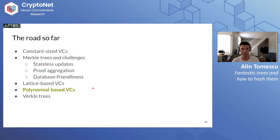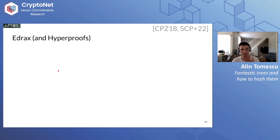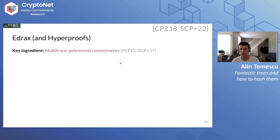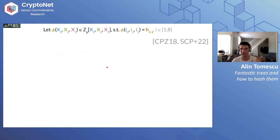Now I want to talk about polynomial-based VCs. Lattice-based VCs kind of address stateless updates. With polynomial-based VCs, we're hoping to address proof aggregation and stateless updates. I'll discuss two lines of work: the EDRAX line of work (CPZ18) and the Hyperproofs line of work (SCP22). The key ingredient in both is a multilinear polynomial commitment. I'll give you an idea of how the EDRAX and Hyperproofs tree works.